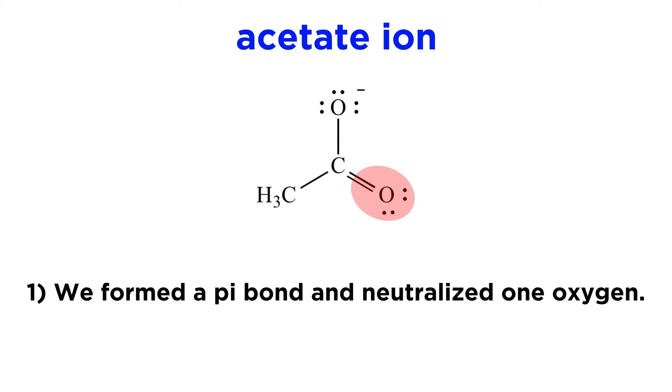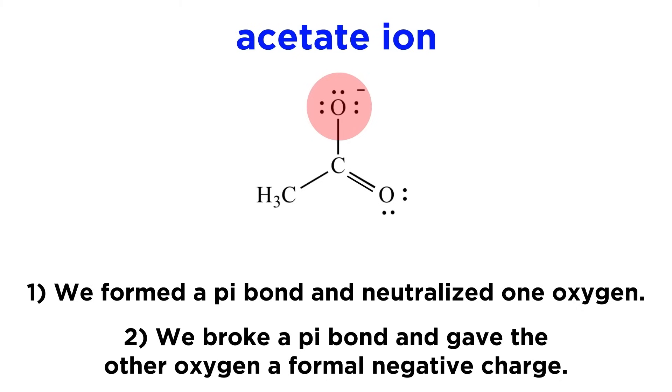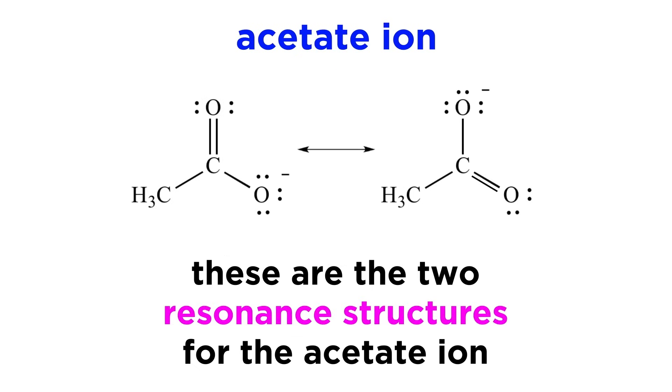So we formed a pi bond and neutralized this oxygen atom, and in order to ensure that carbon still has 4 bonds, we broke a pi bond to form this new oxyanion. These are the two resonance forms, or resonance structures, of the acetate ion, which in this case are absolutely identical structurally.